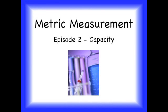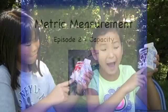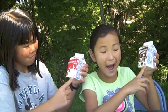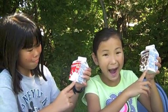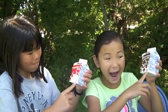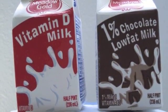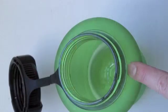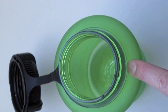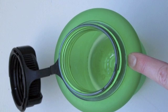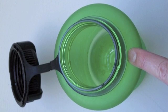Welcome to Metric Measurement, Episode 2, about Capacity. Have you ever noticed the number 236 followed by a little m and a big L on your milk container? These numbers tell you the capacity of your milk carton. Capacity is how much liquid something can hold, or how much space is inside a container.